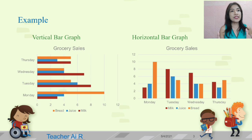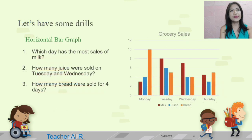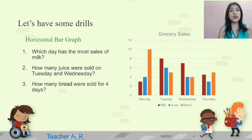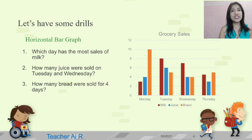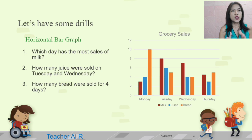Let's try to identify and analyze the bar graph. I have some questions for the horizontal bar graph. Number one: which day has the most sales of milk? Number two: how many juices were sold on Tuesday and Wednesday? And number three: how many breads were sold for four days? Let's answer them one at a time.